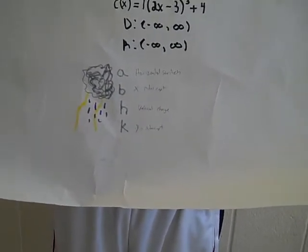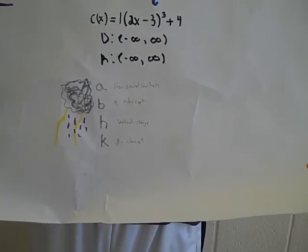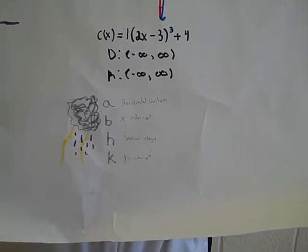A causes a horizontal shift in the graph. B is the x-intercepts, H causes a vertical change, and K is the y-intercept.